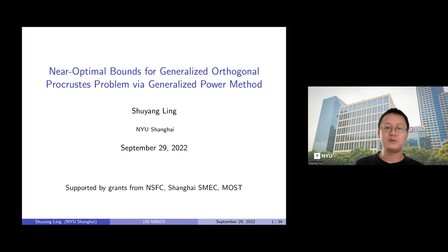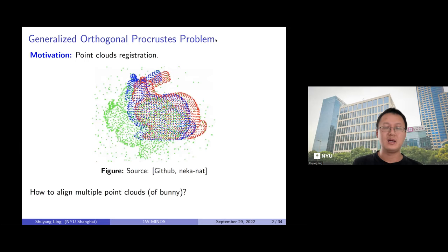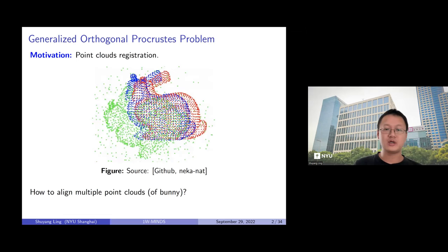The generalized orthogonal Procrustes problem has a couple of important applications. One important application in computer vision is point cloud registration. You can see a plot with three bunnies of different colors — these are point clouds — and the question is how to find a rigid transform, including translation, reflection, and rotation, so that these three point clouds are aligned. This is quite important when you have different pictures each containing objects you want to align simultaneously.